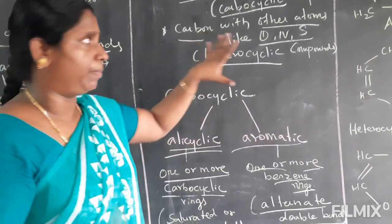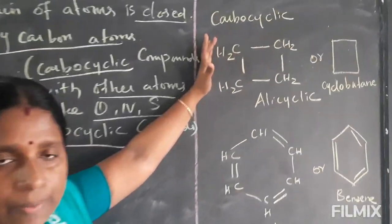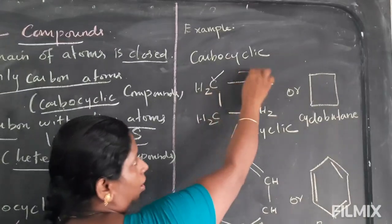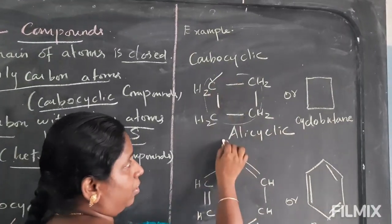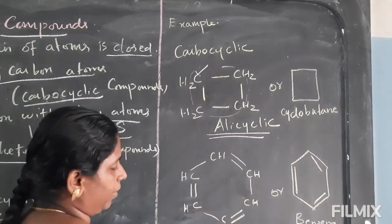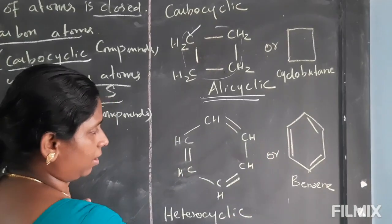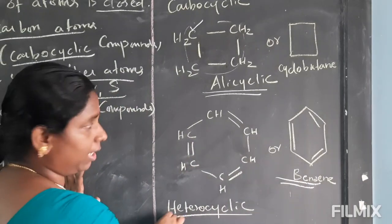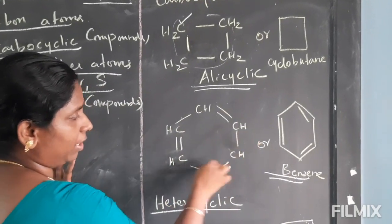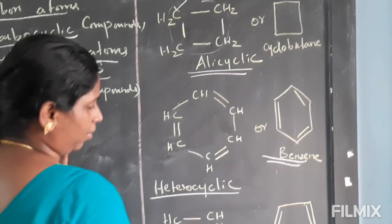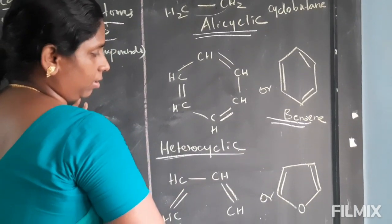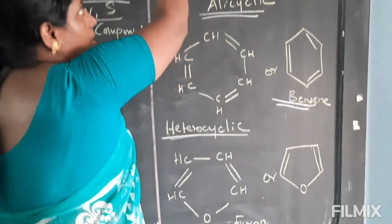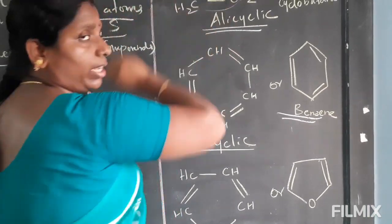Let me see the examples. In carbocyclic, only the carbon chain is there — that is alicyclic. If benzene is present with alternate double bonds, that is aromatic. Heterocyclic examples have other elements within the ring structure.